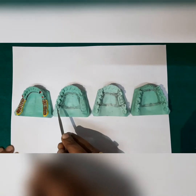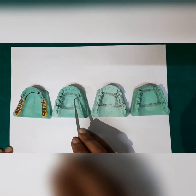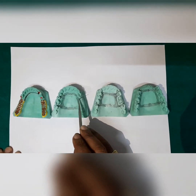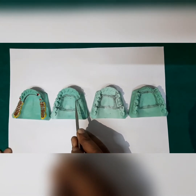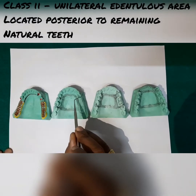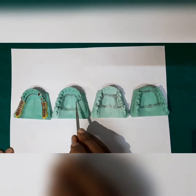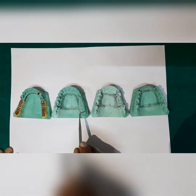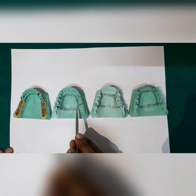Similarly, you have Class 2, in which you have a unilateral edentulous area located posterior to the remaining natural teeth. As you can see, these are the remaining natural teeth and you have a posterior edentulous space, but this is only unilateral.